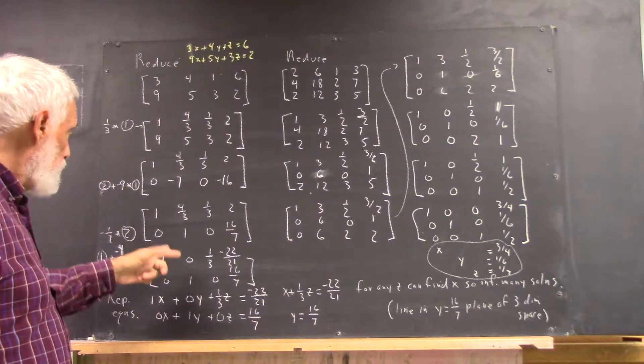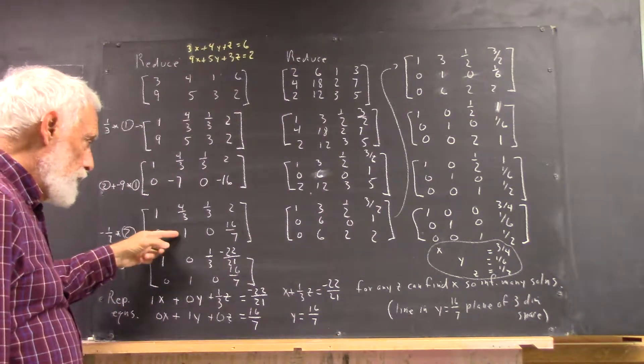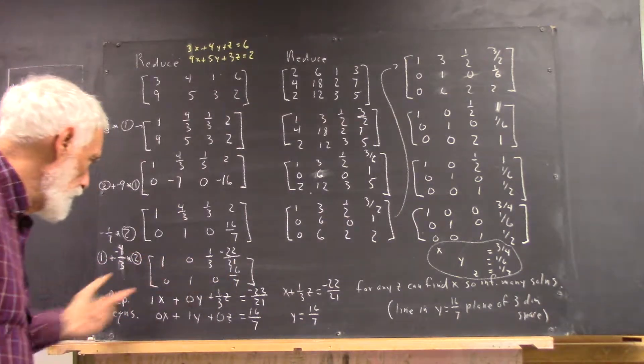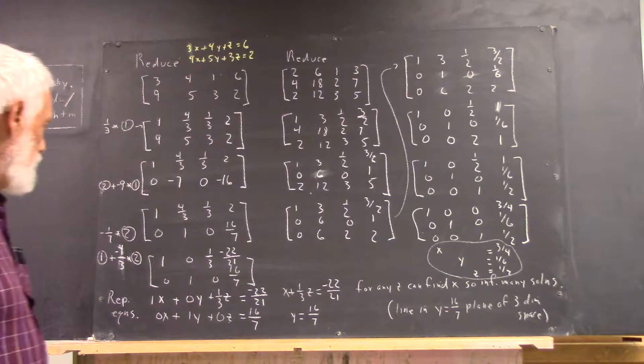We need a zero here. To get that, we're going to take negative four-thirds times this row and add it to this, and here we've got it. And now we have this.